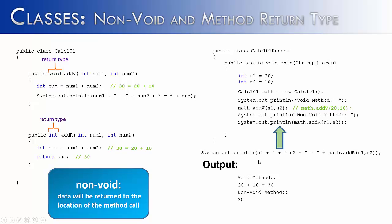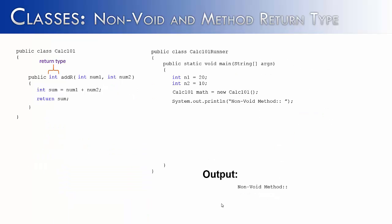We could make it look like the void method output if we wanted. We would just say System.out.println n1 plus n2 equals, and then have the method call inside the System.out.println statement. Now our output would look exactly the same: '20 plus 10 equals 30'. A void method will have the keyword void inside the return type, and a non-void method will have some kind of data type inside the return type, and it will also have the keyword return somewhere within the method.